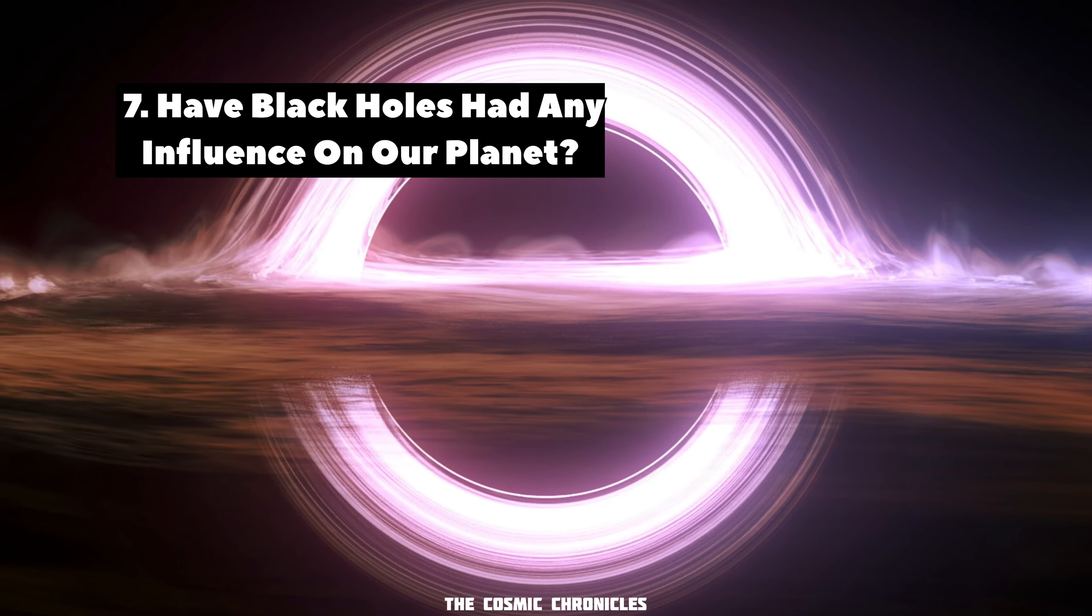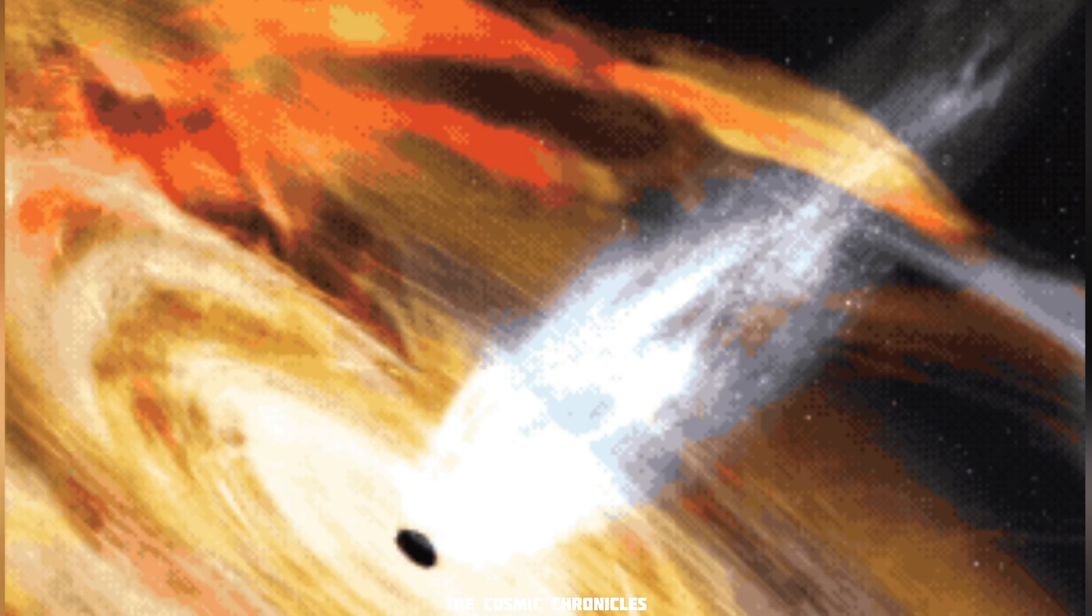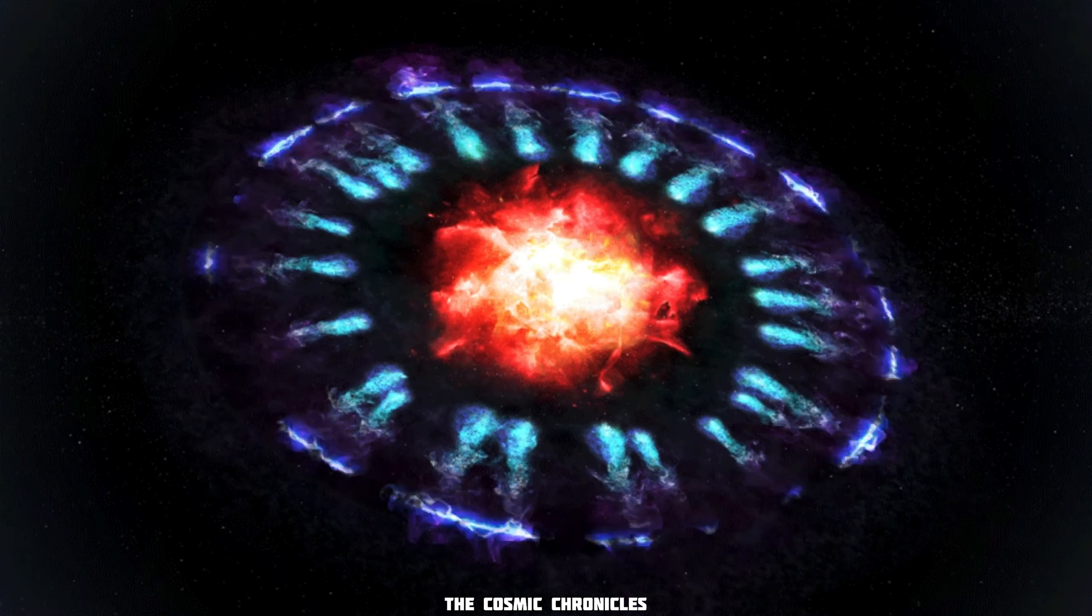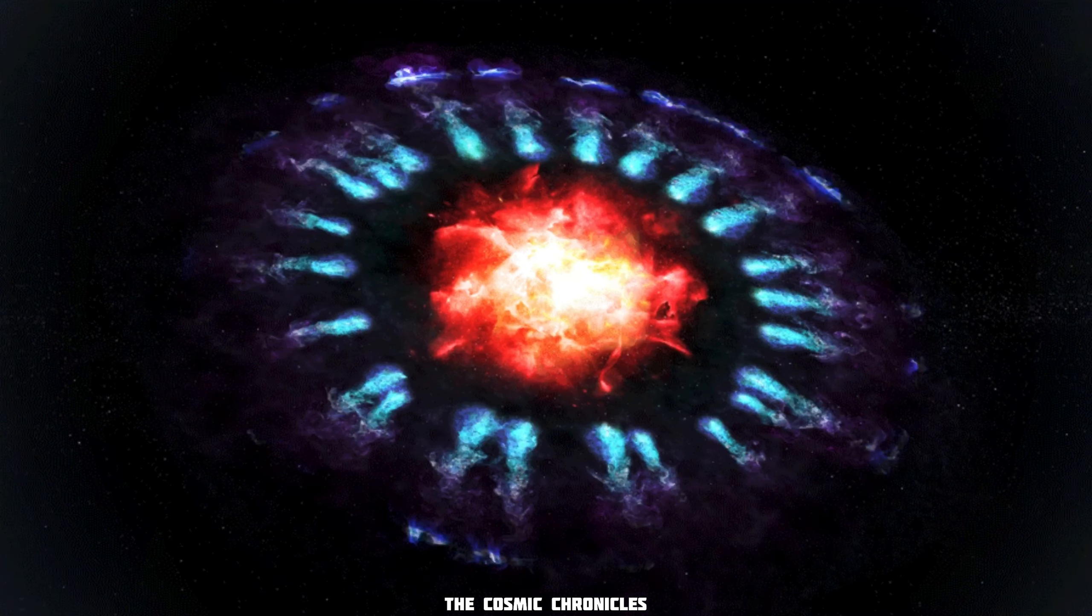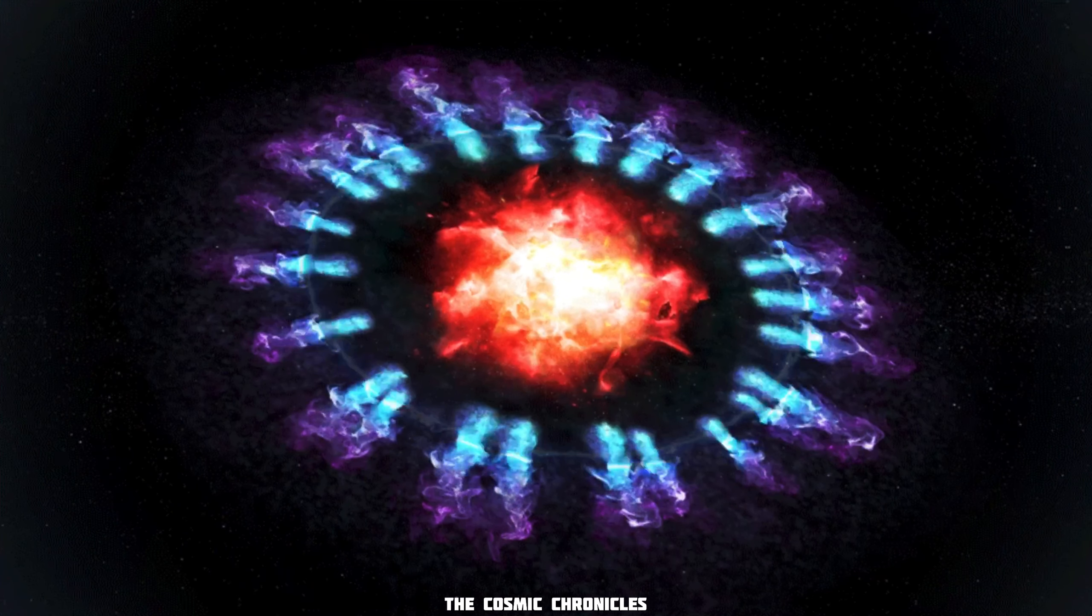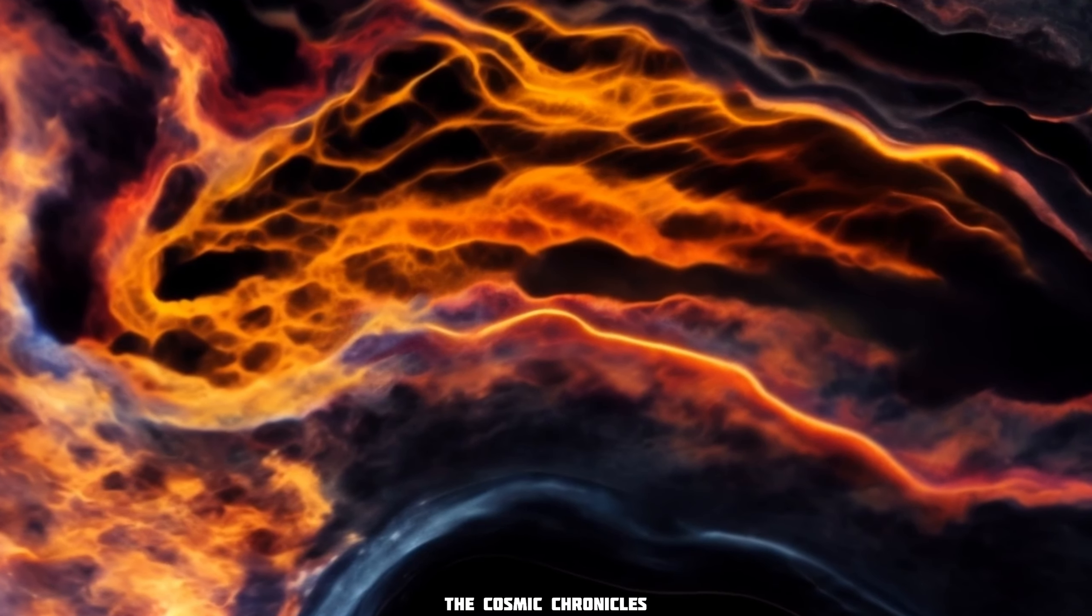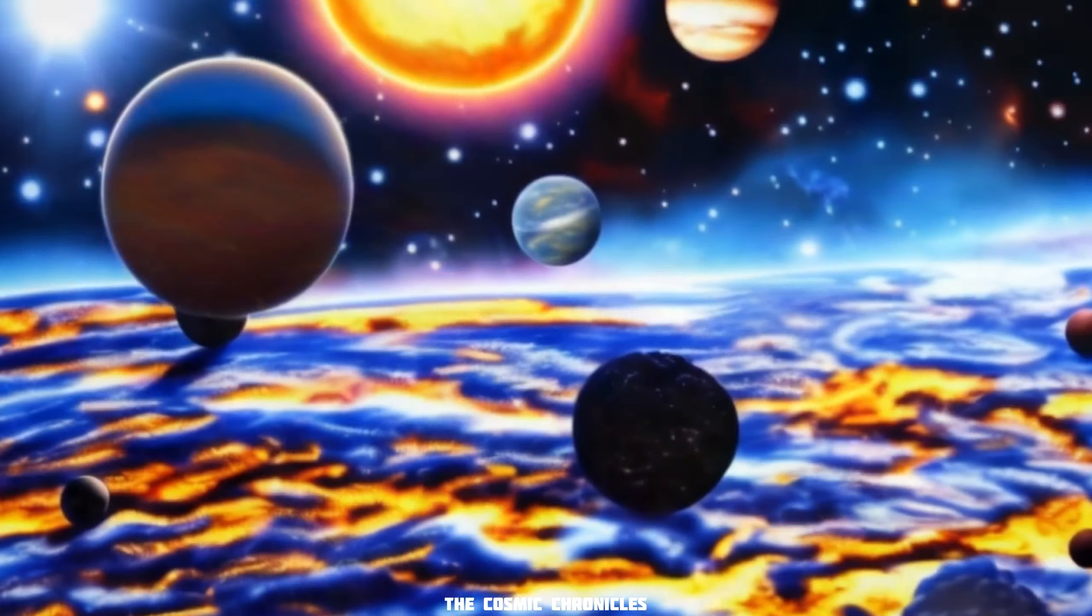Question 7: Have black holes had any influence on our planet? Stellar mass black holes are left behind when a massive star explodes. These explosions distribute elements such as carbon, nitrogen, and oxygen that are necessary for life into space. Mergers between two neutron stars, two black holes, or a neutron star and black hole, similarly spread heavy elements around that may someday become part of new planets.